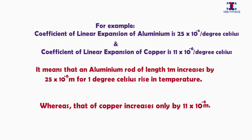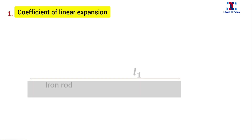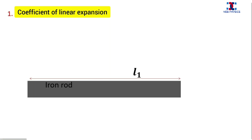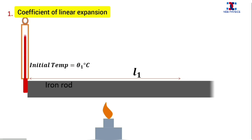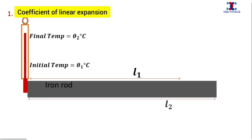Now let's derive the expression for the coefficient of linear expansion. We have an iron rod of length L₁ at an initial temperature θ₁°C. When the iron rod is heated, its temperature rises and it expands. Let the final temperature be θ₂°C and the final length be L₂. The change in length is denoted by ΔL.